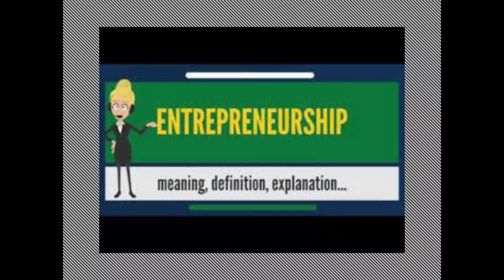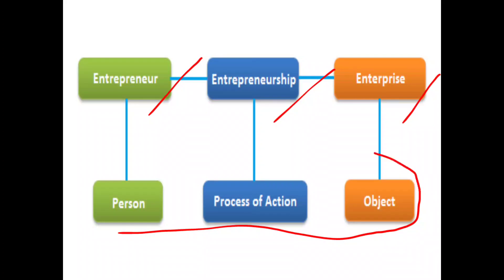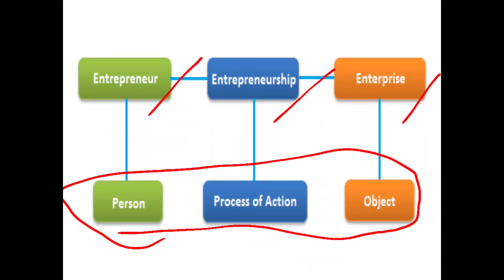That is the word entrepreneurship. I am going to give you the meaning and definition of the word entrepreneurship. At the same time, the connected words are there — that is enterprise. I will be explaining what is enterprise, then later what is entrepreneurship, then the connected word entrepreneur. So here is a chart: entrepreneur, then entrepreneurship, and then enterprise. After the explanation, you will come to know that entrepreneur is a person, entrepreneurship is a process of action, and enterprise is an object. That's why these three words are connected.